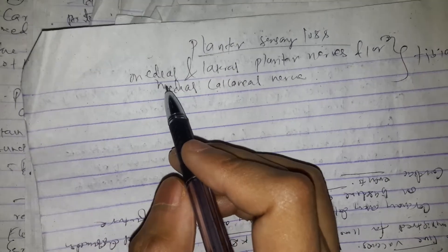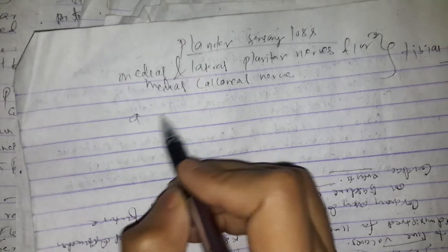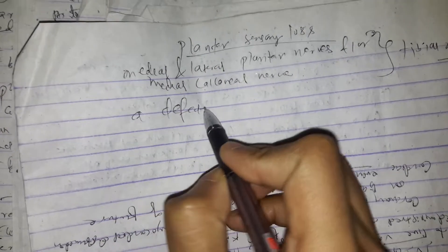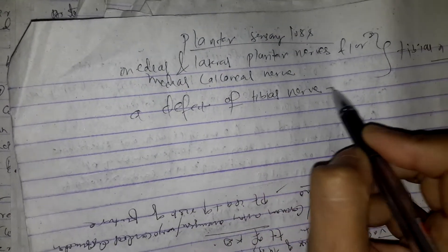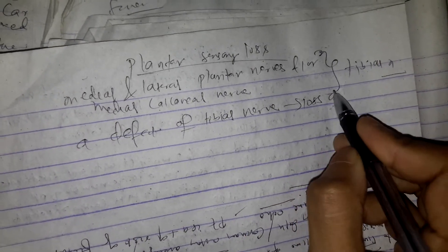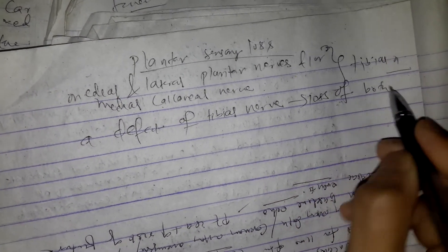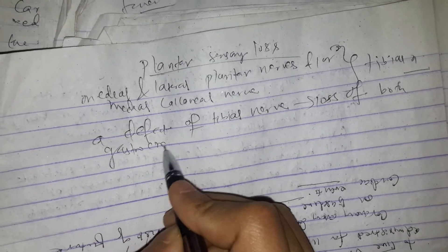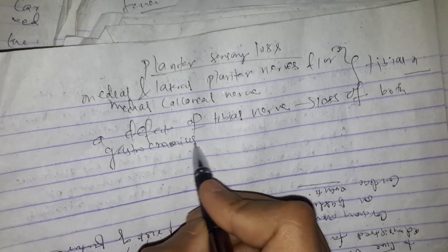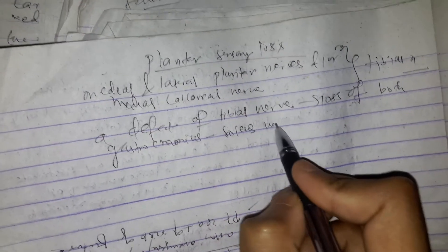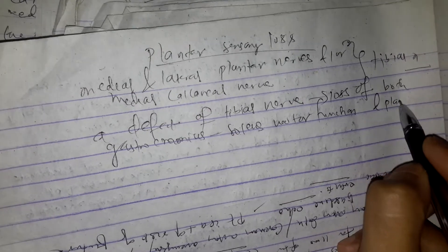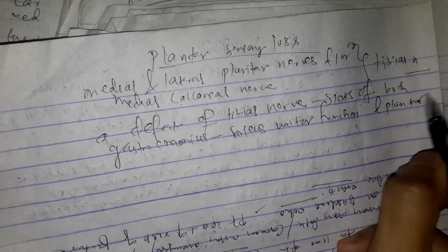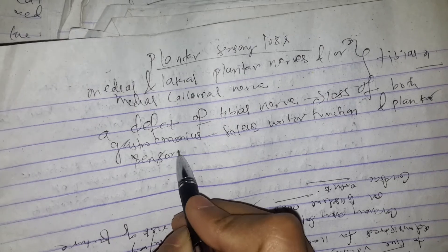A defect of the tibial nerve would result in loss of both gastrocnemius and soleus motor function, as well as plantar sensory loss.